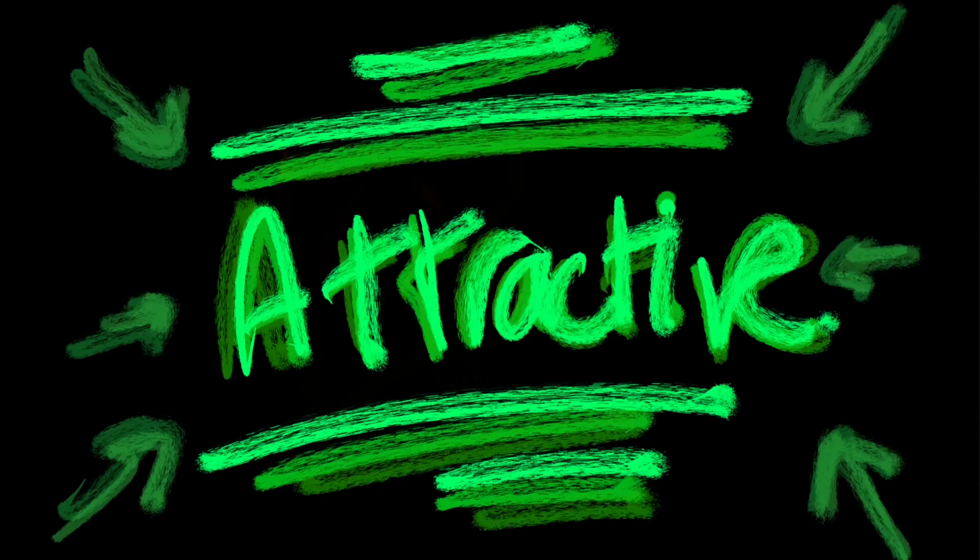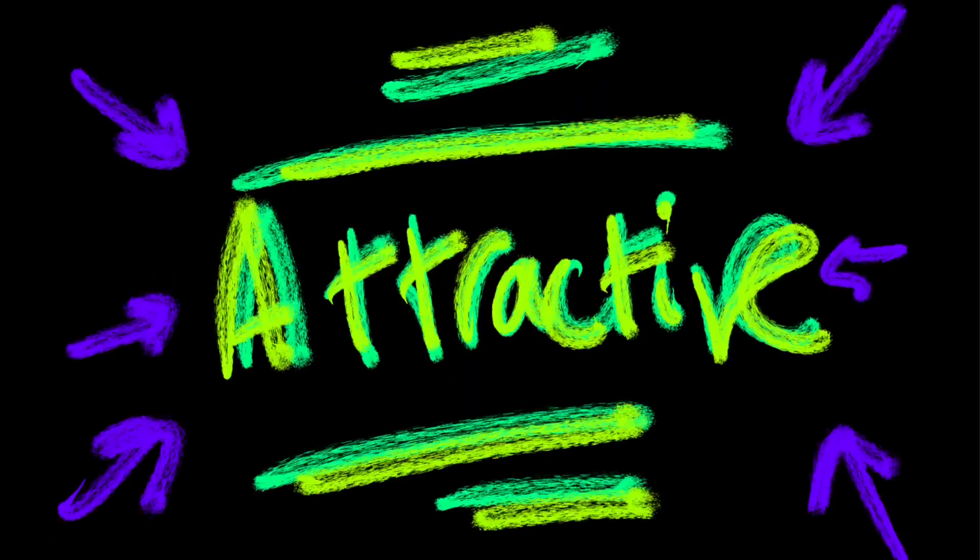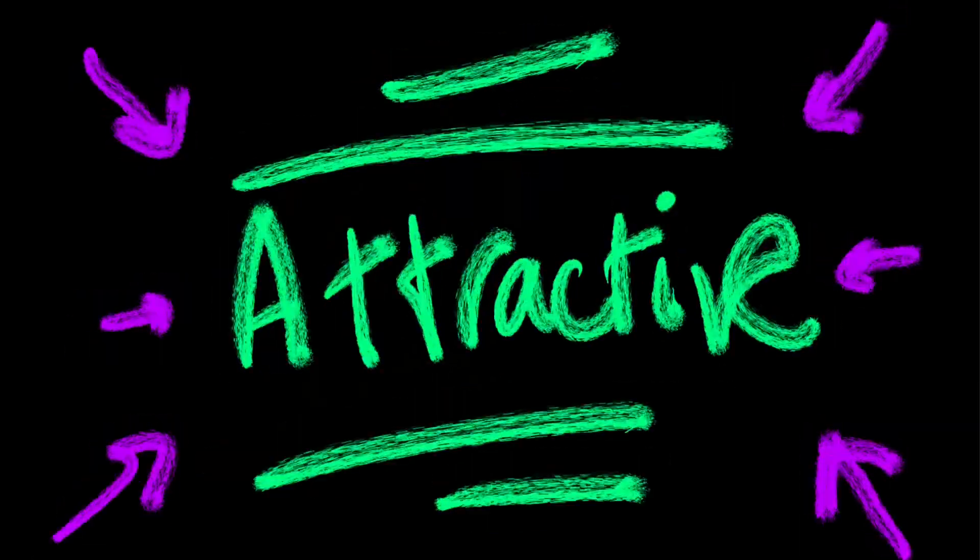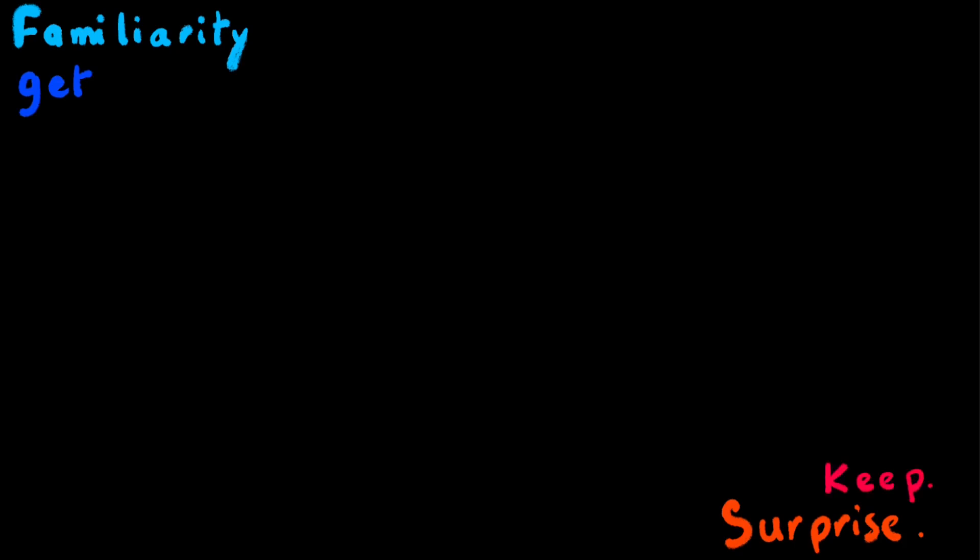What makes a shape attractive? Attractiveness is the combination of two factors: familiarity and surprise. Familiarity helps you to get the public's attention, while surprise allows you to keep it.